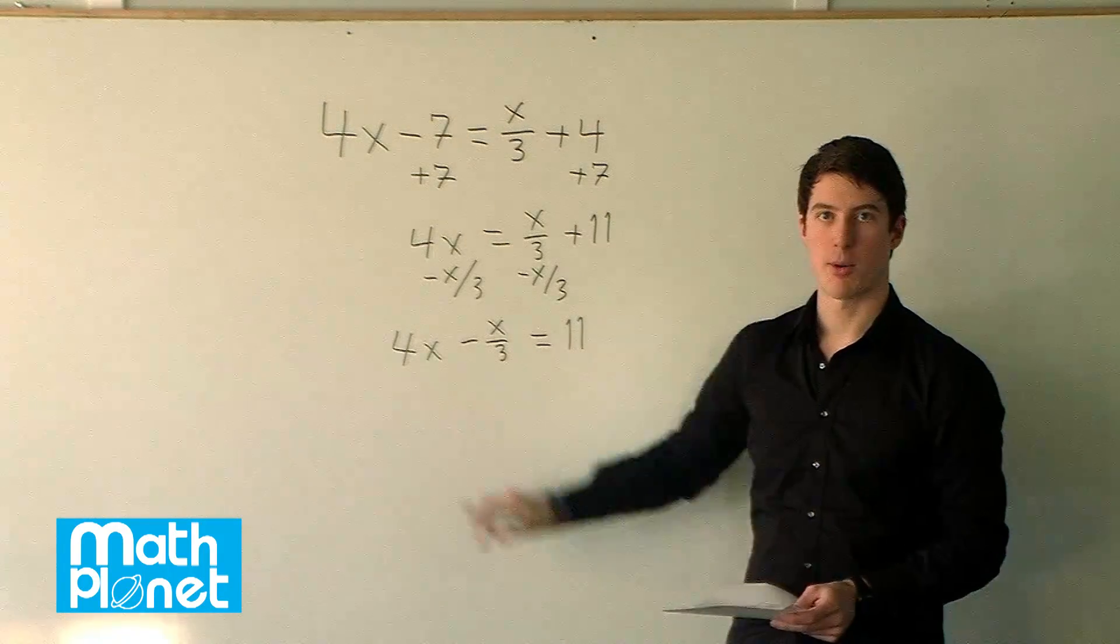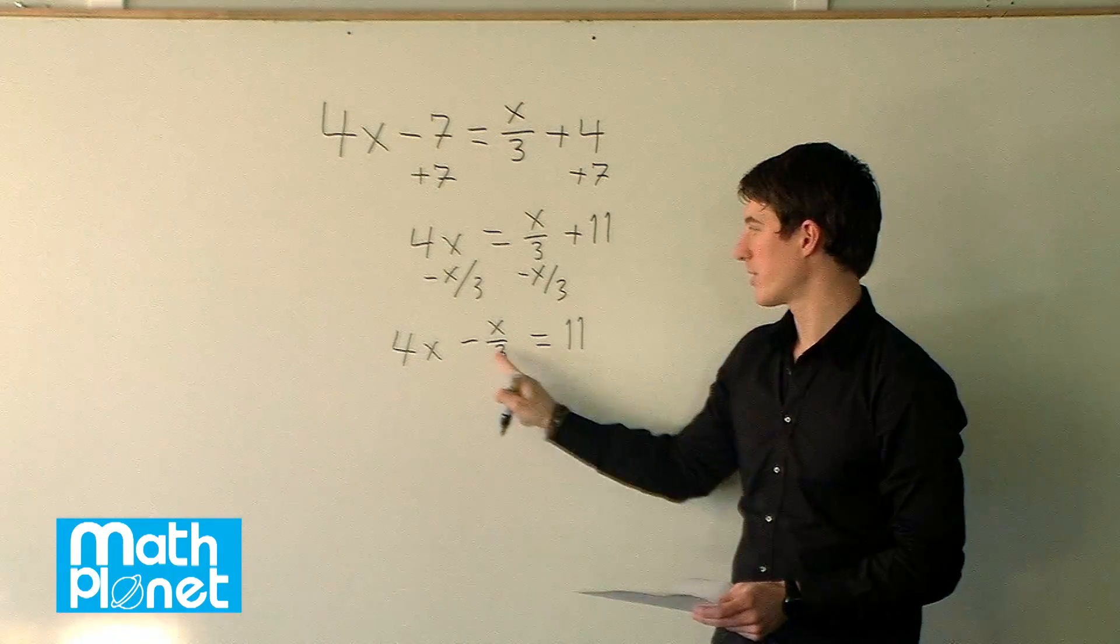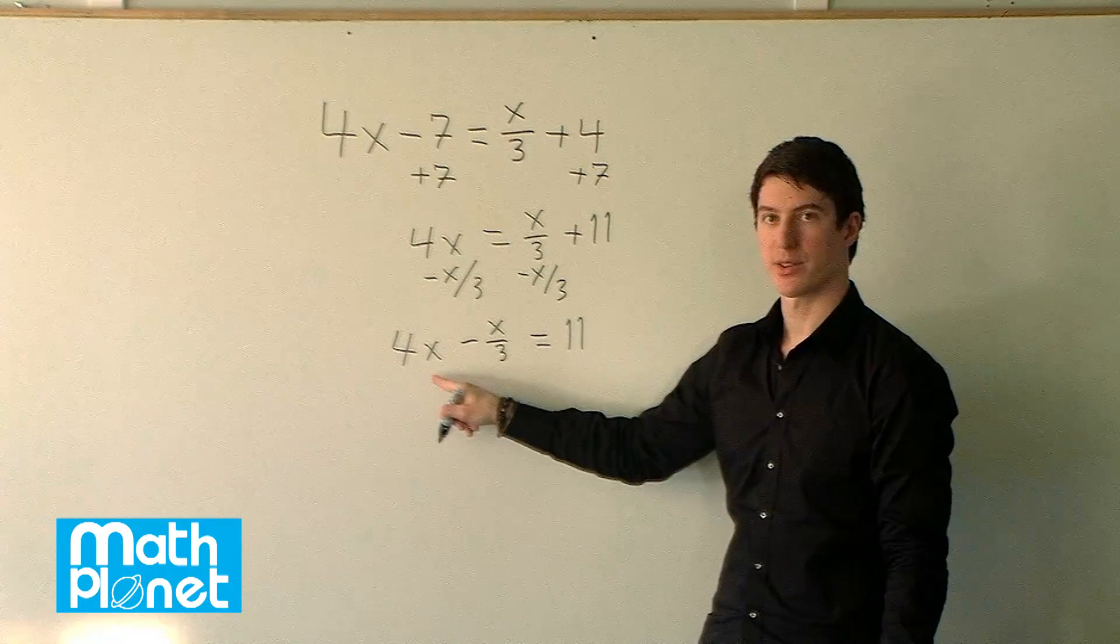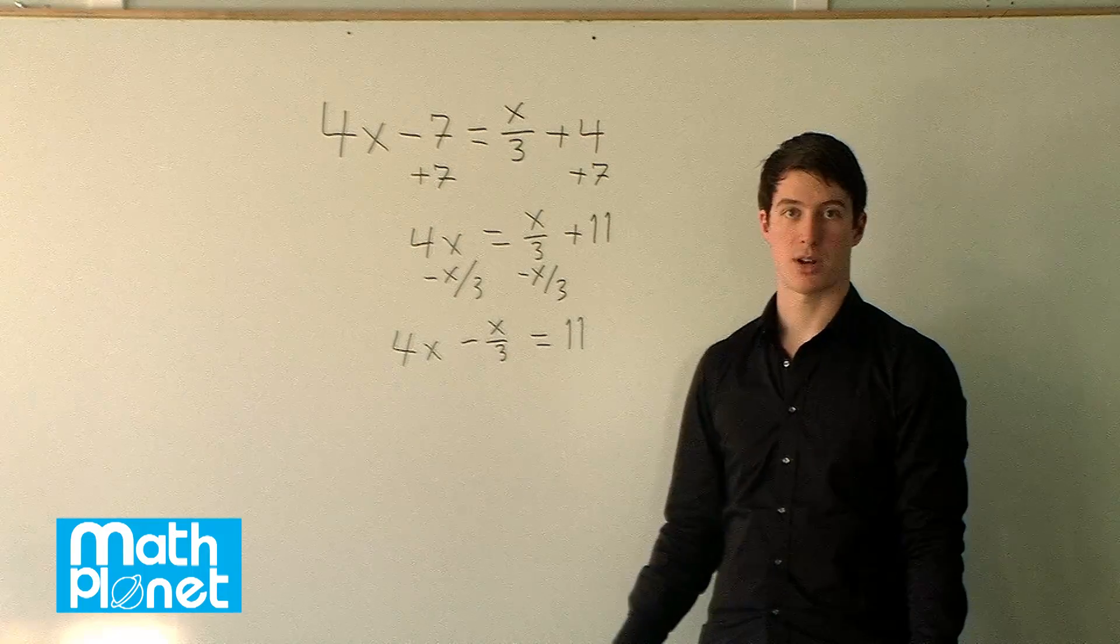Now these don't have the same common denominator, so we can't add them in the normal way. We can't add 4 plus 3, for example, or 4 minus 3. So we need to rewrite these to have the same common denominator.